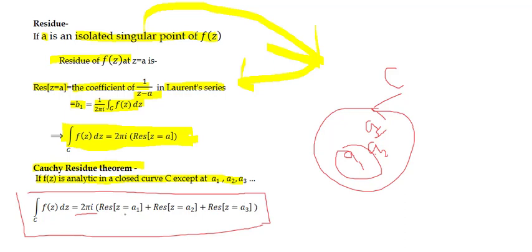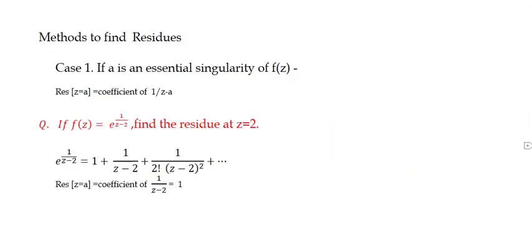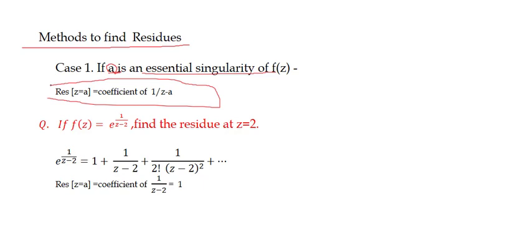To apply this theorem, we need to calculate residues at each singular point. Methods to find residues — Case 1: if 'a' is an essential singularity of f(z), the residue at z equal to 'a' is the coefficient of 1/(z−a) in the Laurent series expansion. For example, given f(z) = e^(1/(z−2)), find the residue at z = 2.